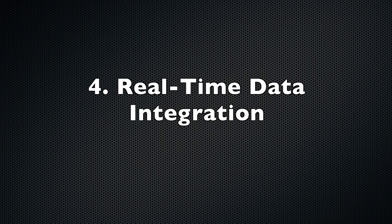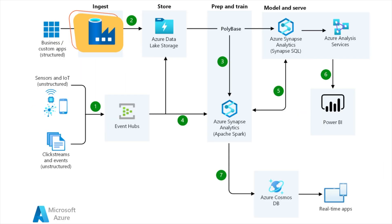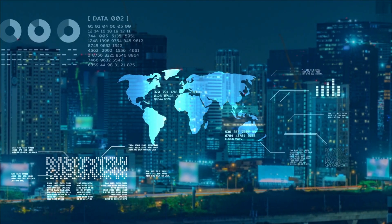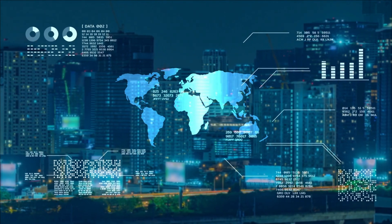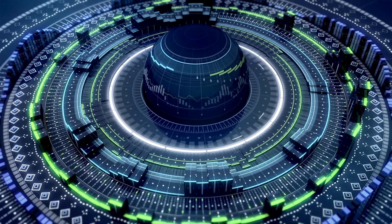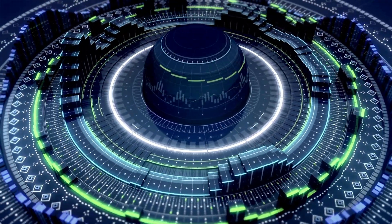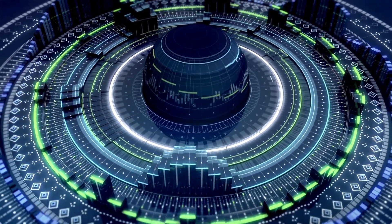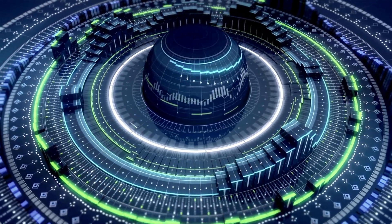Number four: real-time data integration. ADF can be used to integrate real-time data from various sources, such as social media, IoT devices, and web applications. By using ADF to integrate real-time data, businesses can gain insights into their operations in real-time, allowing them to make quick decisions and respond to changing business environments. If you are working for any organization, you have likely seen scenarios where you are getting data constantly from a streaming device — that can be your IoT device, your Twitter account, or maybe your Facebook account — and in that case, you can also use ADF to integrate real-time data.